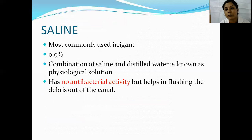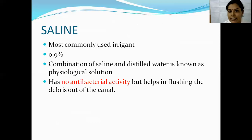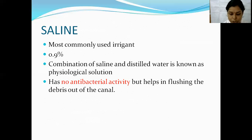Coming to the most commonly used irrigants: the first is saline. 0.9% saline is used as an endodontic irrigant. It does not have any antimicrobial property, nor does it have any tissue-dissolving or chelation properties. The only property saline has is that it helps mechanically flush away debris out of the root canal. It is also known as a physiological solution.